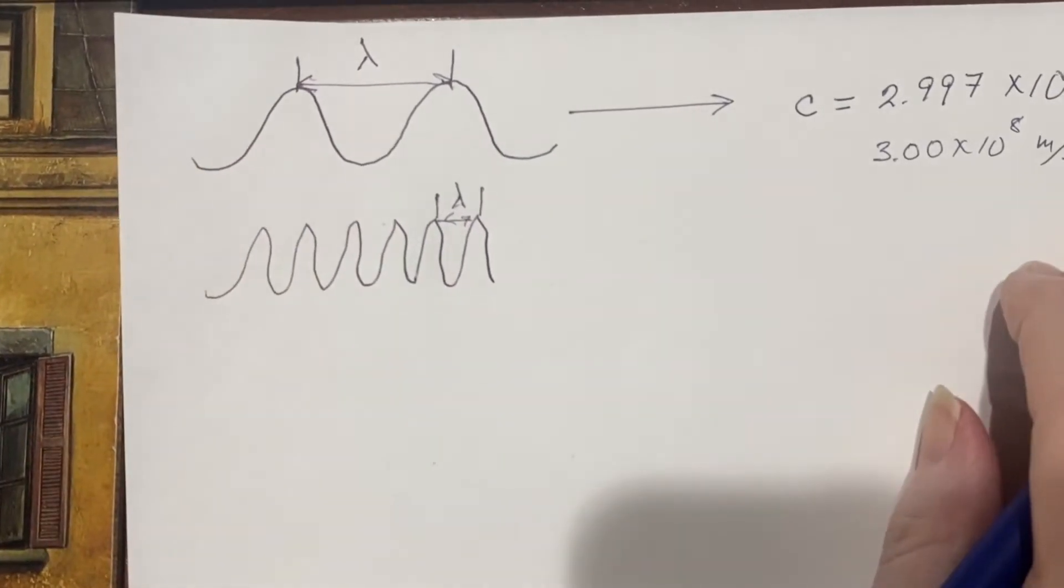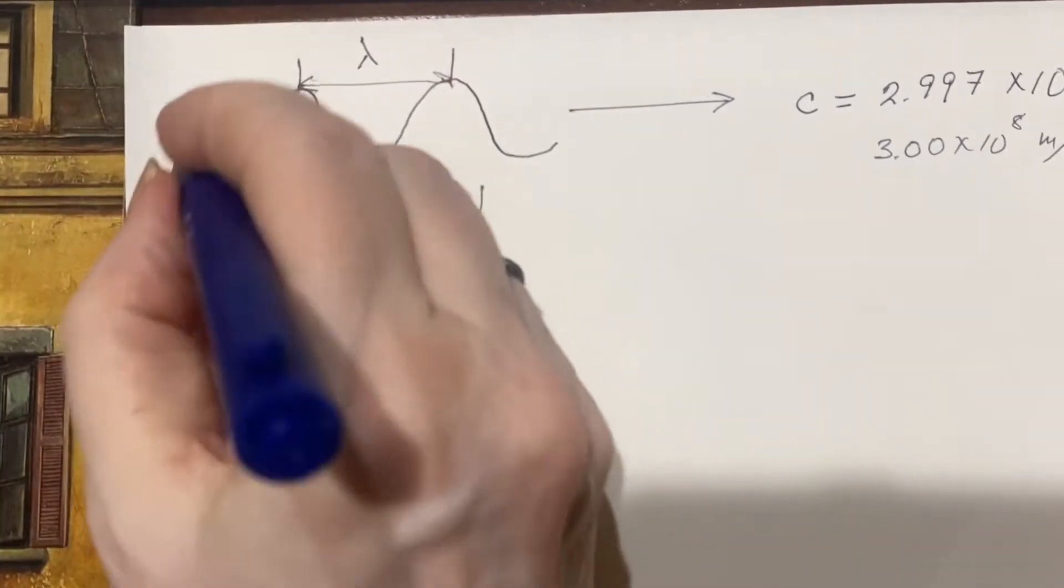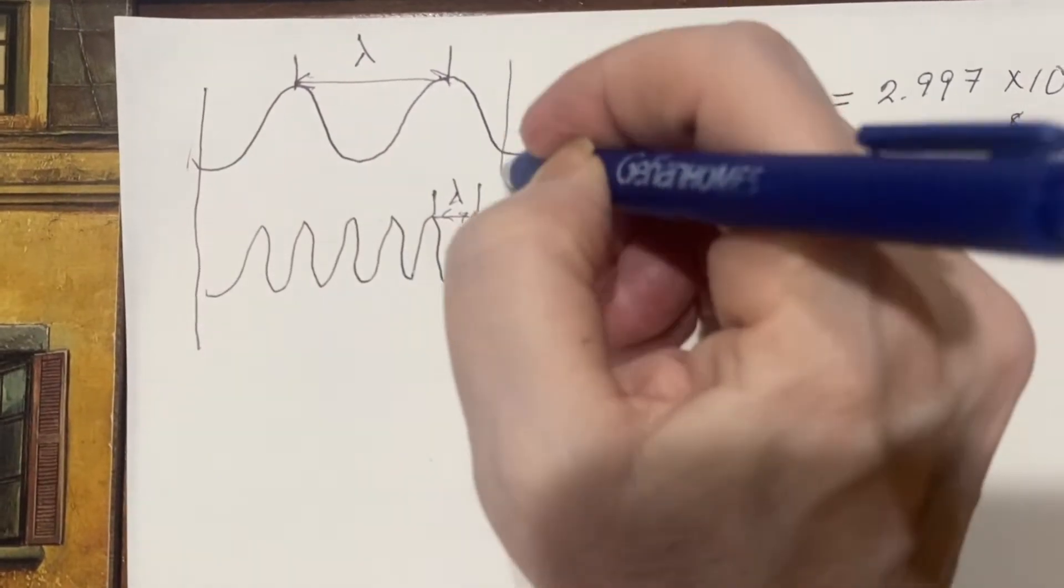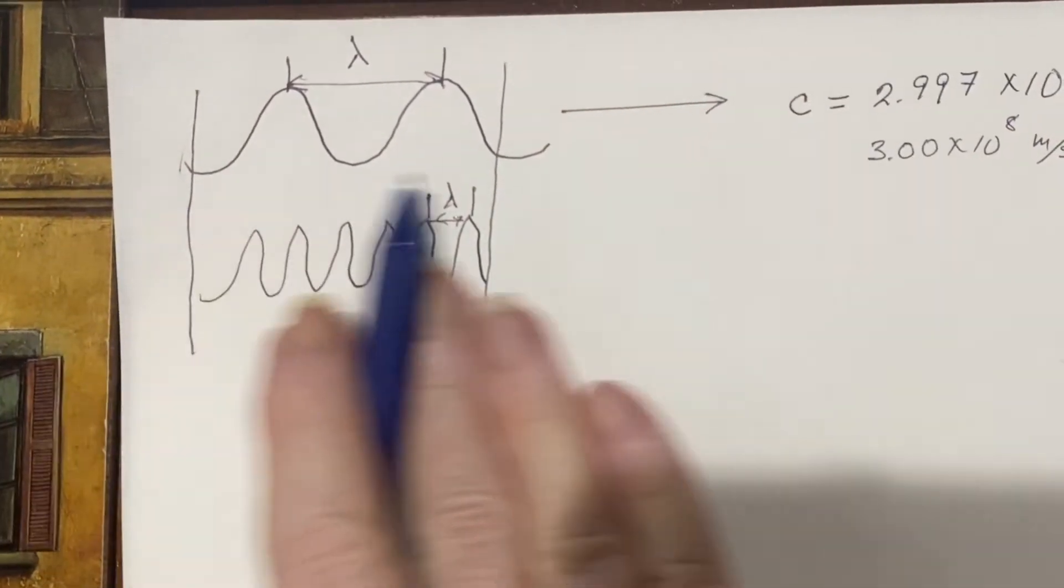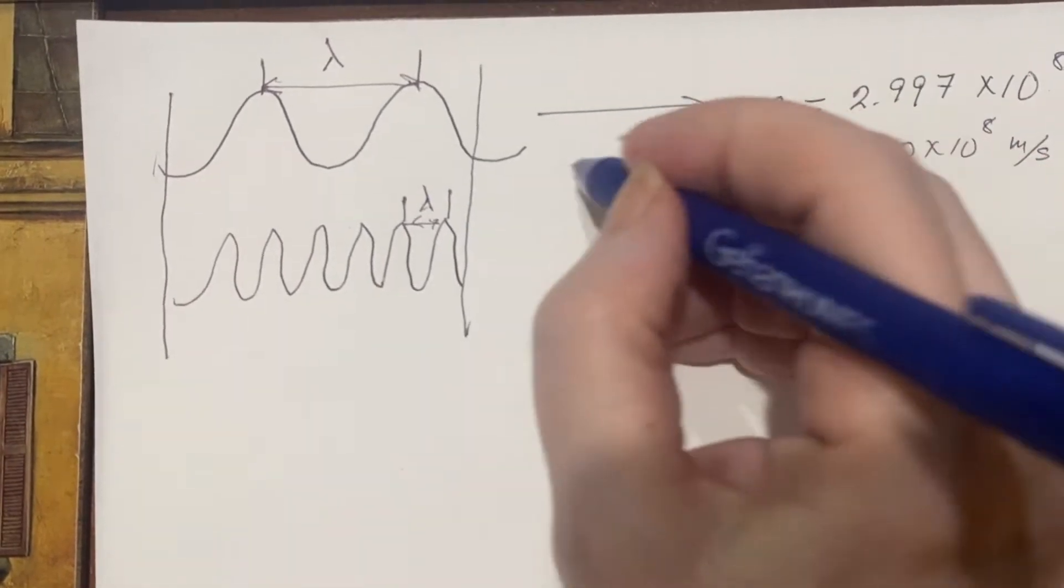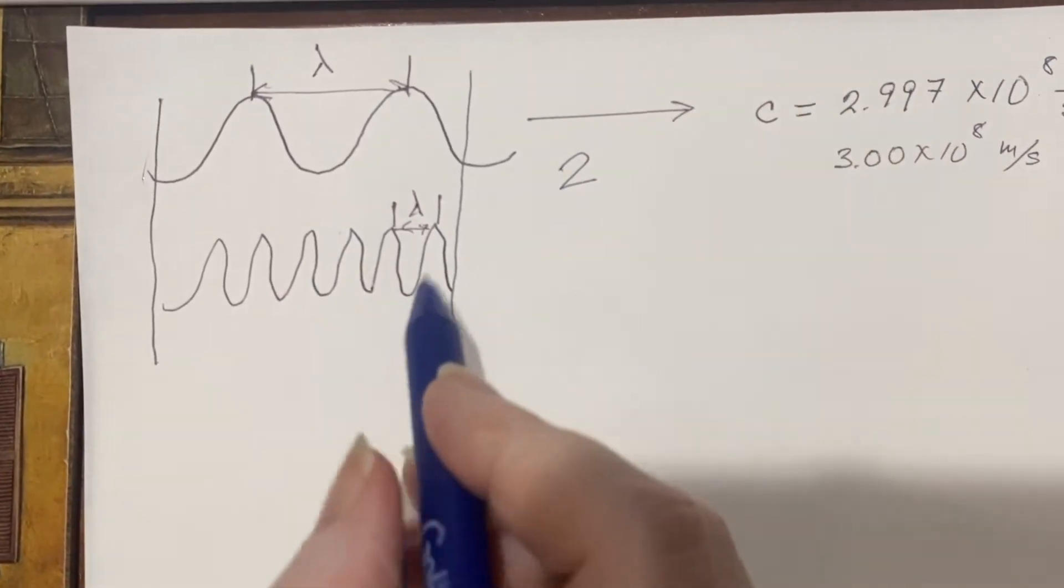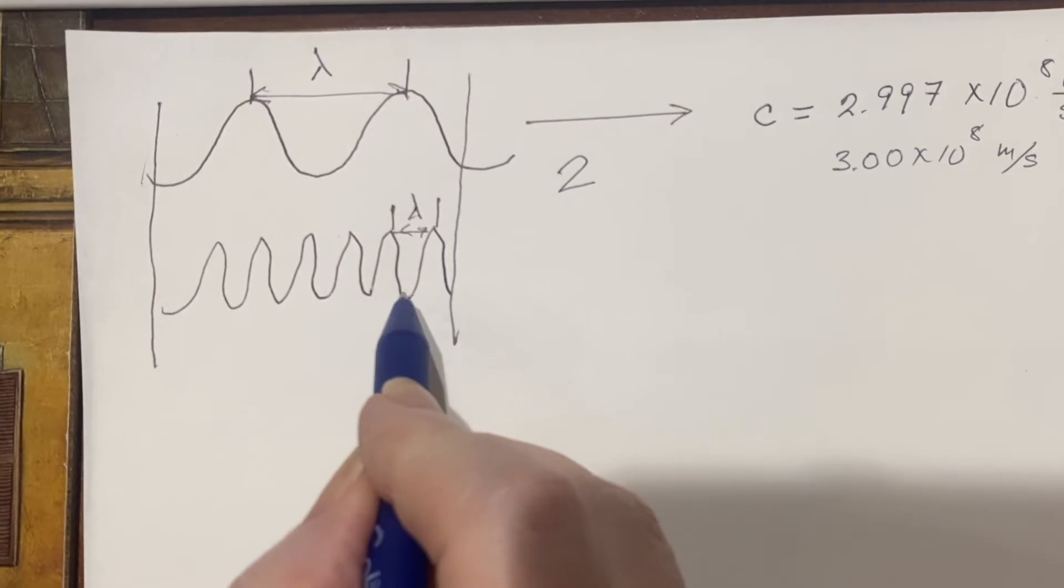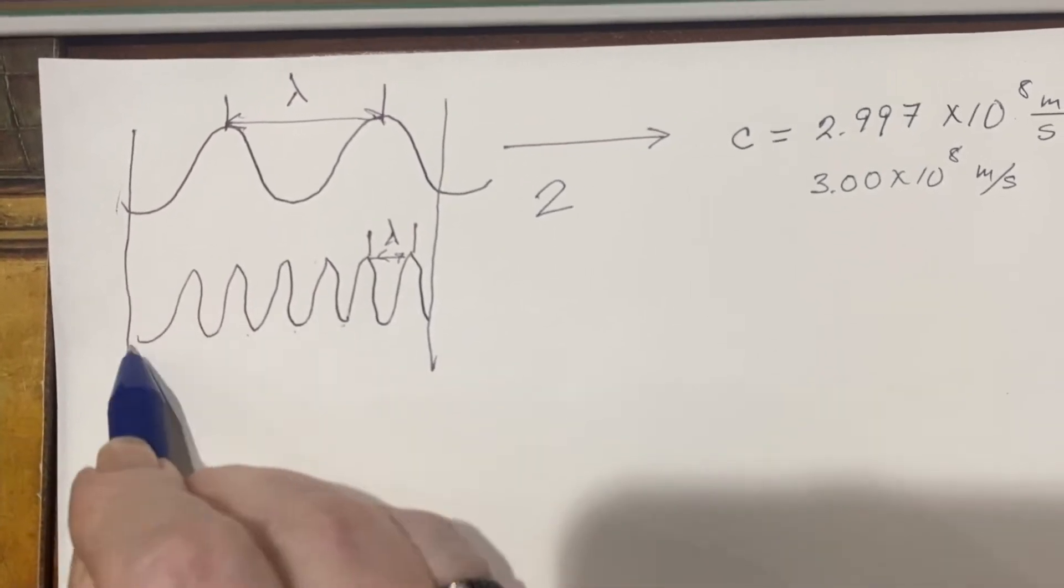But the whole thing is moving just as quickly. So from here to here, this whole grouping moves at the same speed. For this one, you would see two in the amount of time that you saw one, two, three, four, five, six of these.